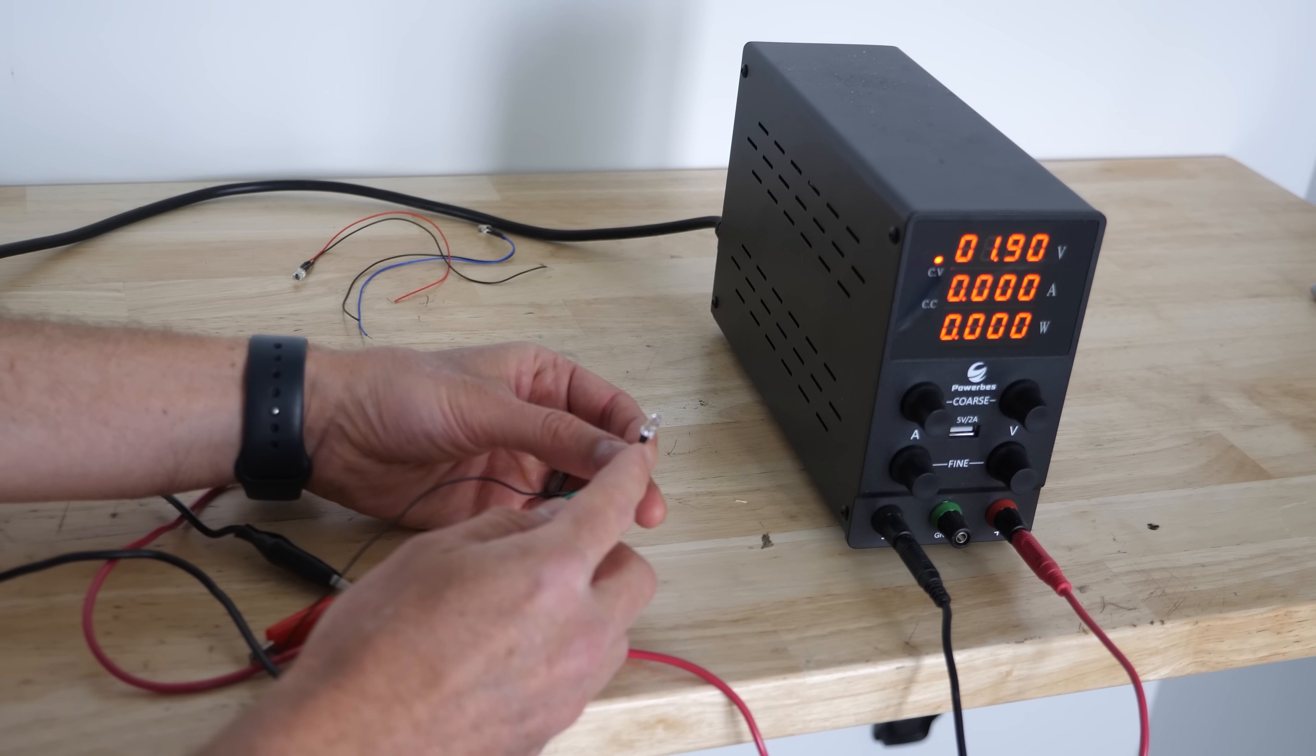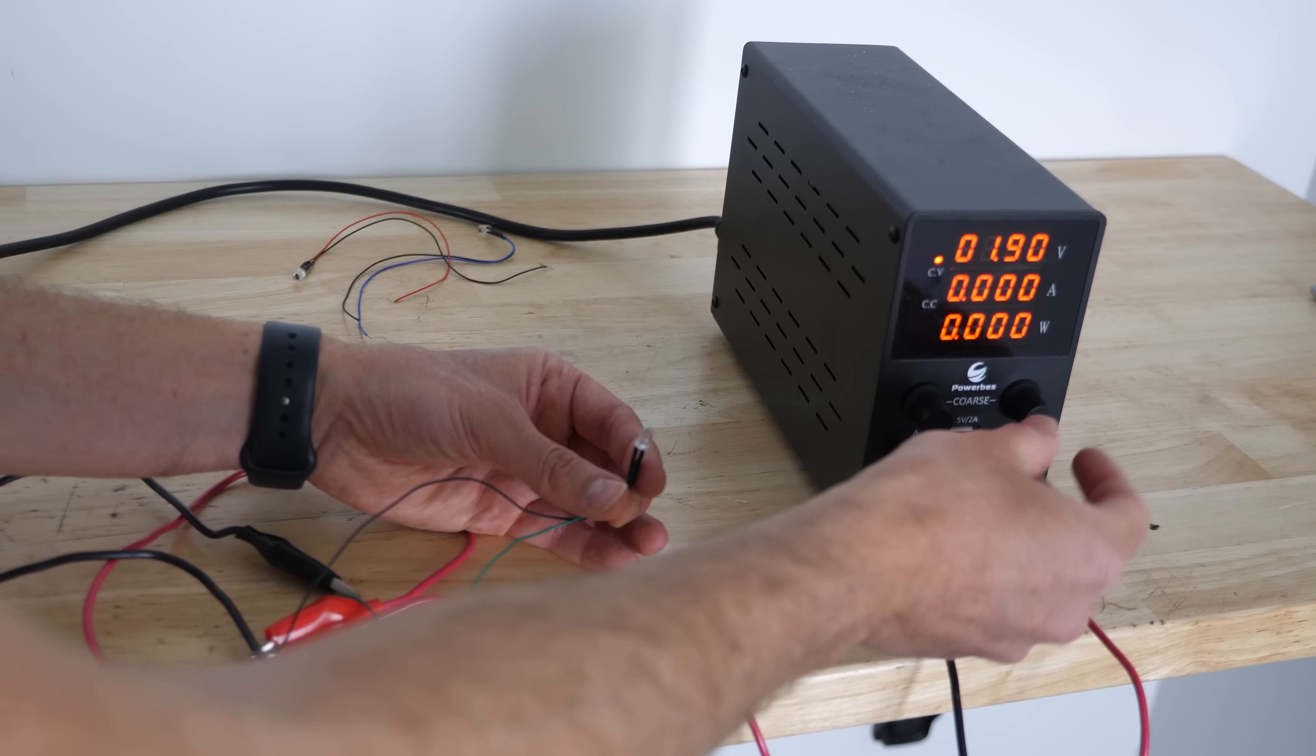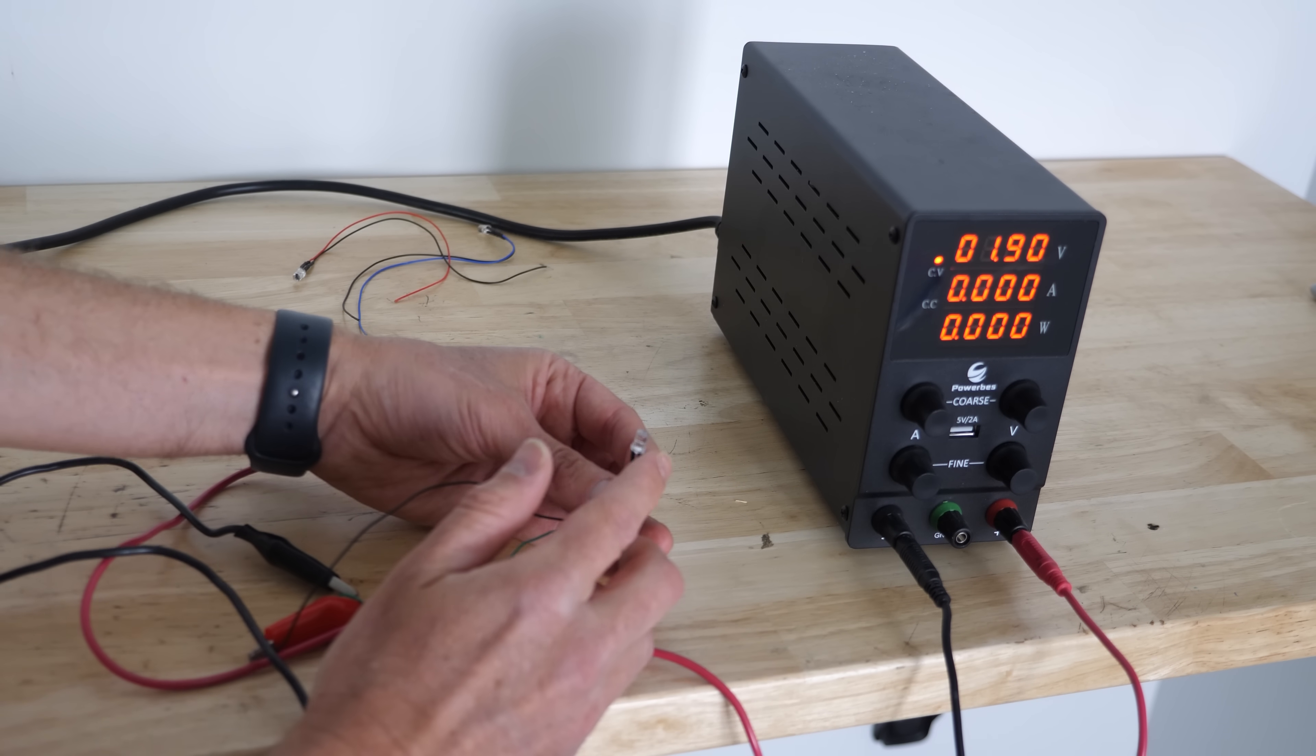Okay now what I need to do is measure the threshold voltage of these LEDs. So that's the minimum voltage required to produce photons. So I'm just going to estimate that by changing the voltage until I barely start to see some light.